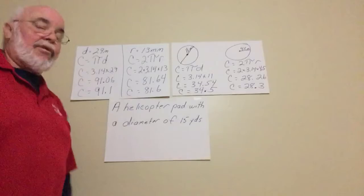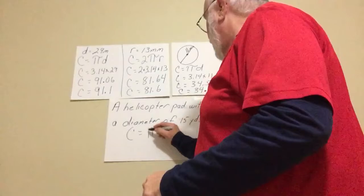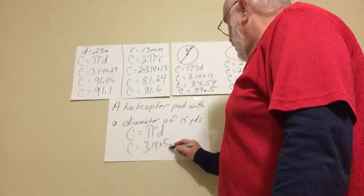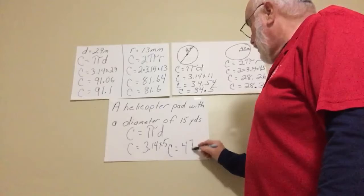The last one is just a word problem. A helicopter pad with a diameter of 15 yards. So they're giving us the diameter. So we're just going to use circumference equals pi times diameter. Circumference equals 3.14 times 15. I'm running out of room. So circumference equals 47.1.